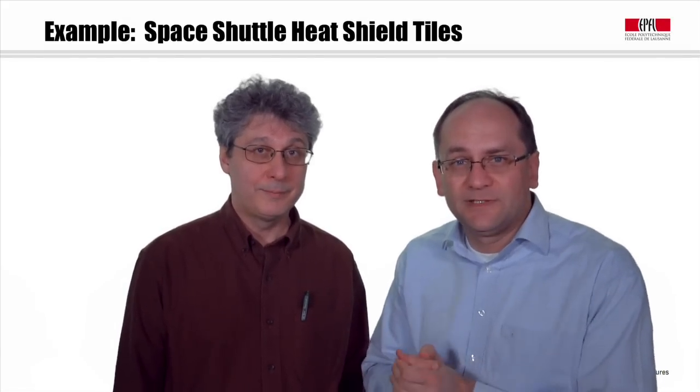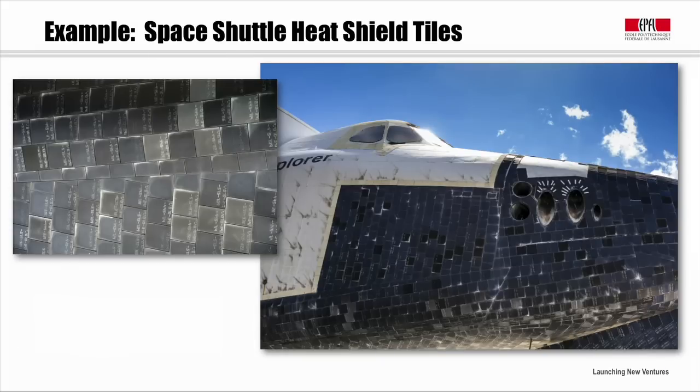Let's look at another famous example: the heat shield tiles from the Space Shuttle. It's a ceramic used to protect the Space Shuttle from going up in flames when it re-enters orbit — and bad things happened when they fell off. The main point is that this ceramic has certain properties that allow it to protect the Space Shuttle. But how many would you sell? You'd probably sell around 10,000 per Space Shuttle times four Space Shuttles when they were still flying — about 40,000 overall. This is a limited market.